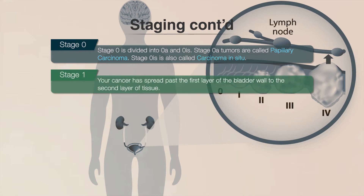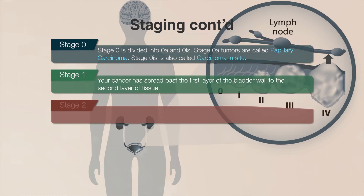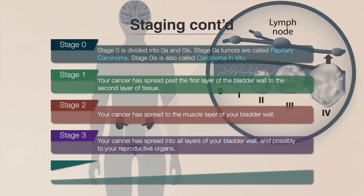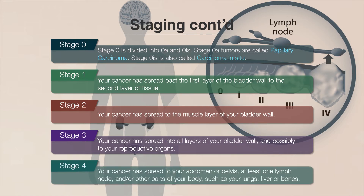In stage 1, your cancer has spread past the first layer of the bladder wall to the second layer of tissue. In stage 2, your cancer has spread to the muscle layer of your bladder wall. In stage 3, your cancer has spread into all layers of your bladder wall and possibly to your reproductive organs. And in stage 4, your cancer has spread to your abdomen or pelvis, at least one lymph node, and/or other parts of your body, such as your lungs, liver, or bones.